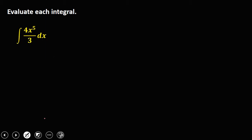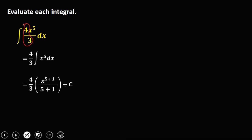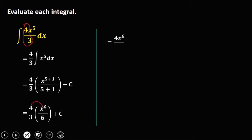For the given integral of 4 over 3 times x to the power 5 dx, we put the constant outside the integral: 4 over 3 times the integral of x to the power 5 dx. Adding 1 to the exponent gives 4 over 3 times x to the power 6 over 6, plus C. Simplifying, that's 4x to the power 6 over 18, plus C. Reducing 4 and 18 by dividing by 2, we get 2x to the power 6 over 9, plus C.